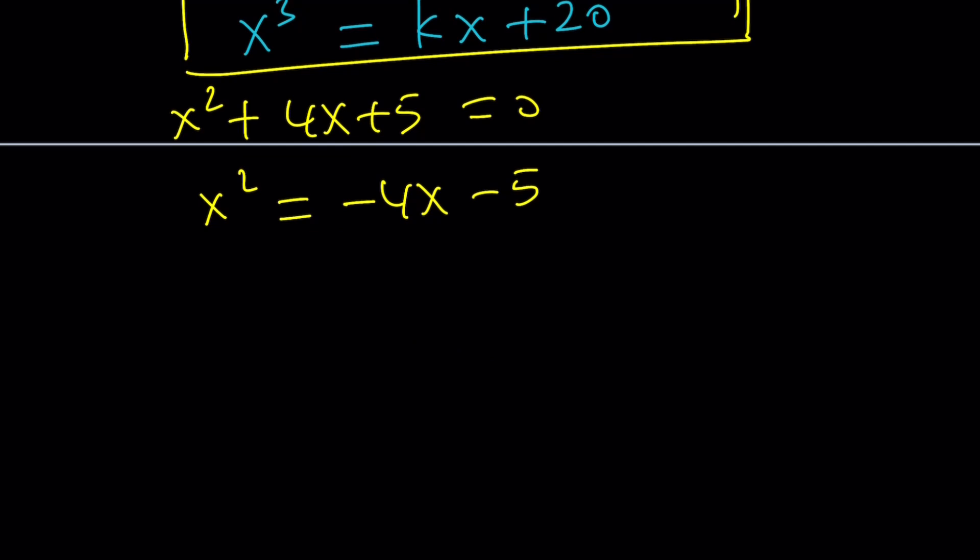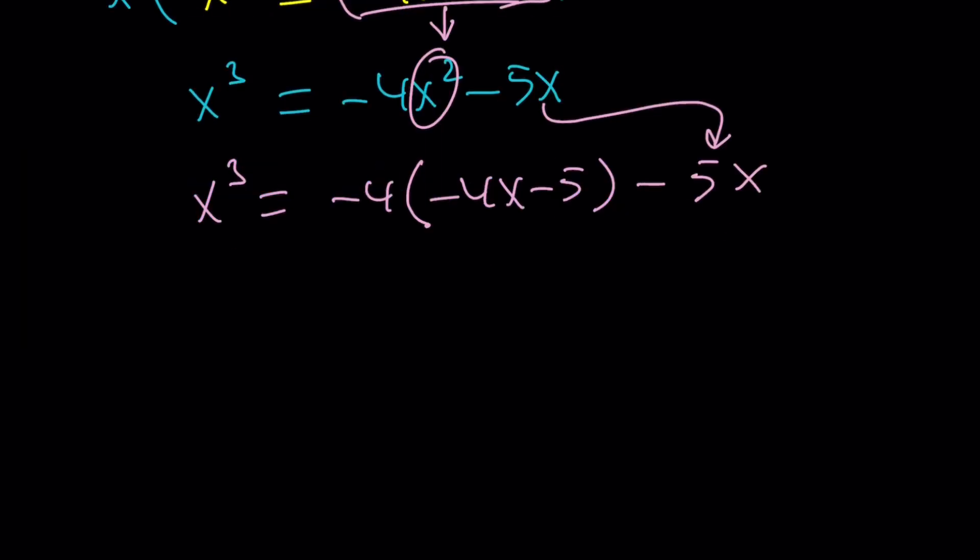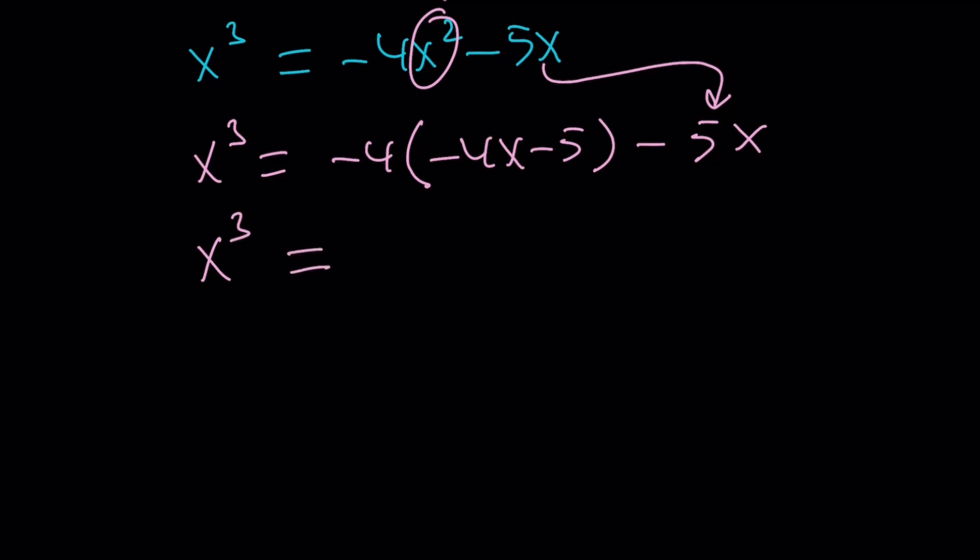Since we're trying to get x cubed, multiply both sides by x. That gives you x cubed equals negative 4x squared minus 5x. But remember, x squared is always negative 4x minus 5. So plug it in. x cubed becomes negative 4 times negative 4x minus 5 minus 5x. Let's simplify this expression.